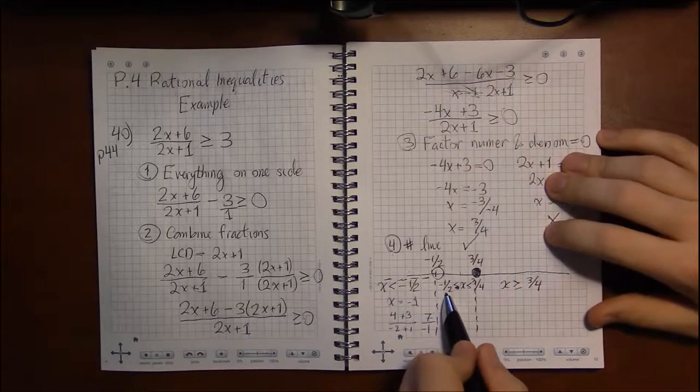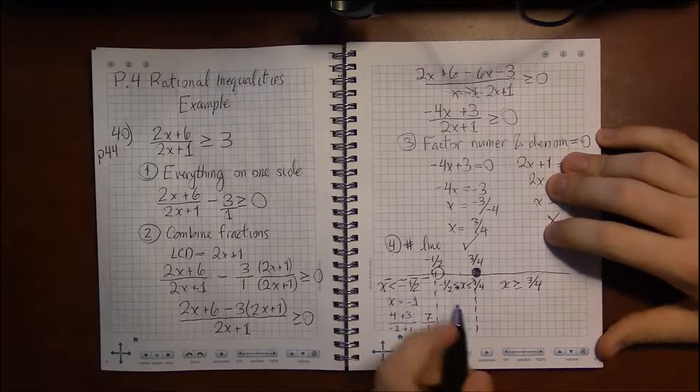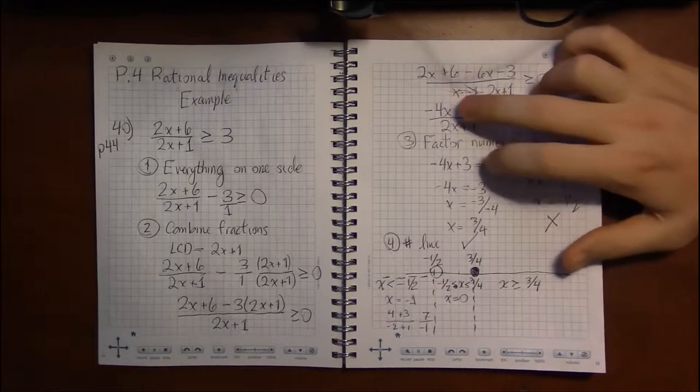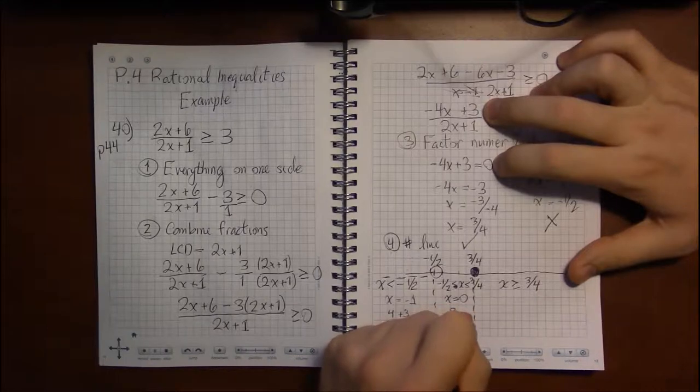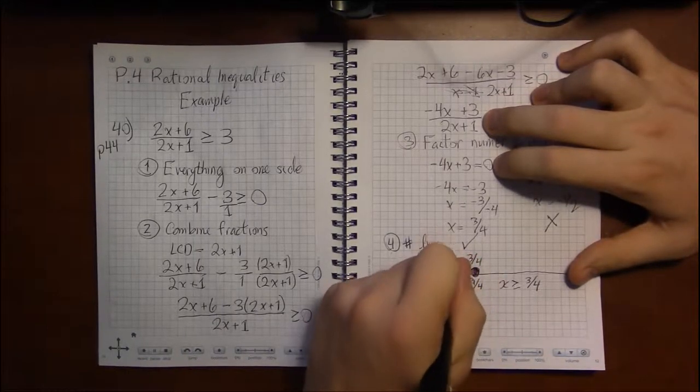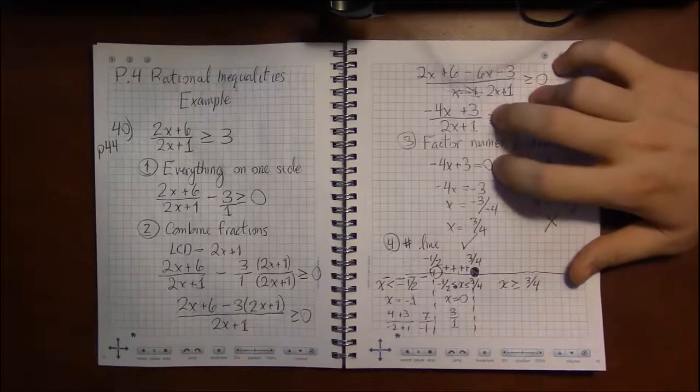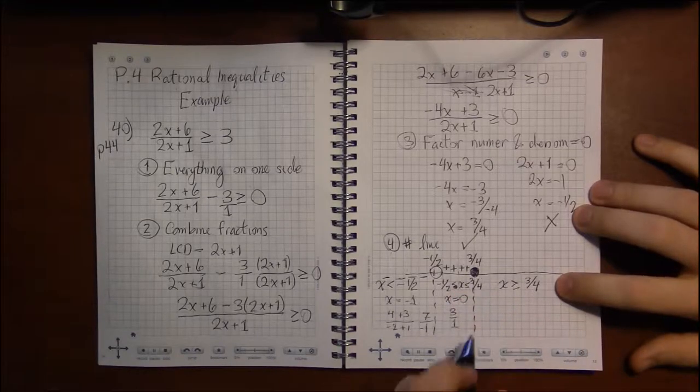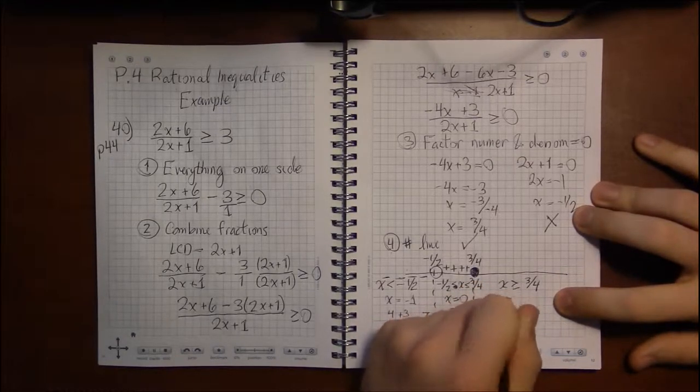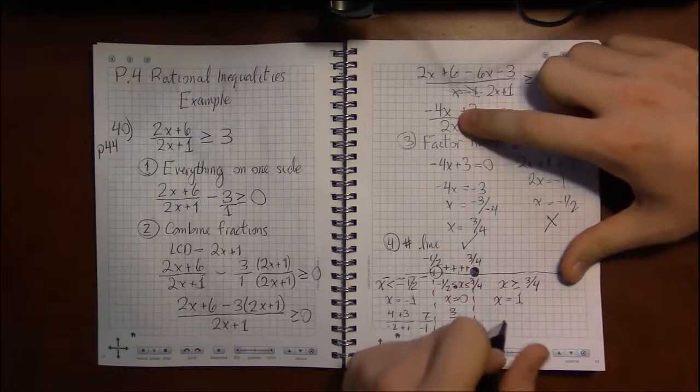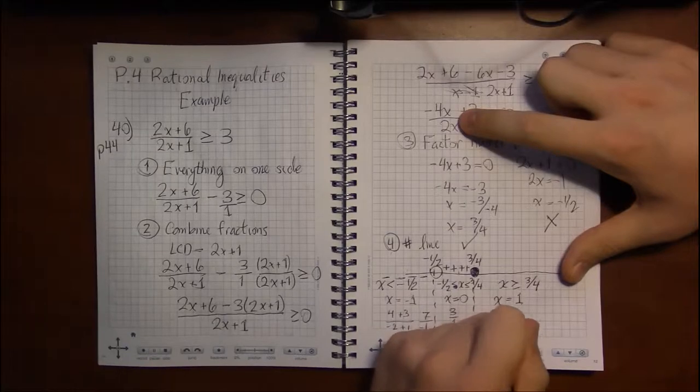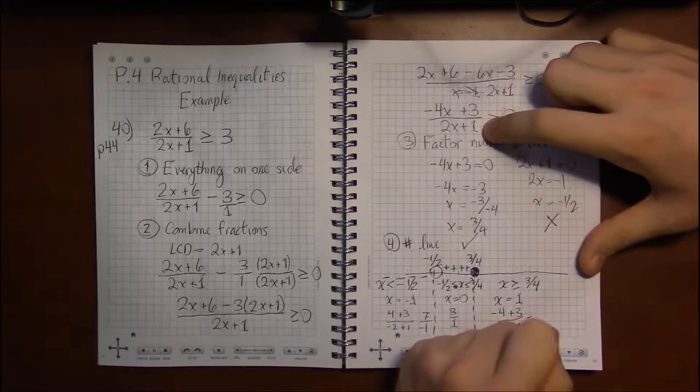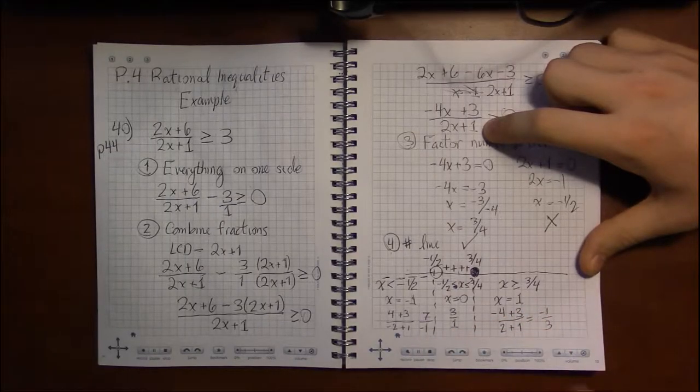Now. Something between minus 1 half and 3 quarters. Well, the only nice number I know of between those two is 0. Plugging in 0, it's just going to give us 3 on top and 1 on bottom. So positive over positive, we get positive. And something larger than 3 quarters. Since we can't pick endpoints for our test points, let's pick something like 1. Picking 1 gets us minus 4 plus 3 over 2 plus 1. That is minus 1 over 3. That is negative.